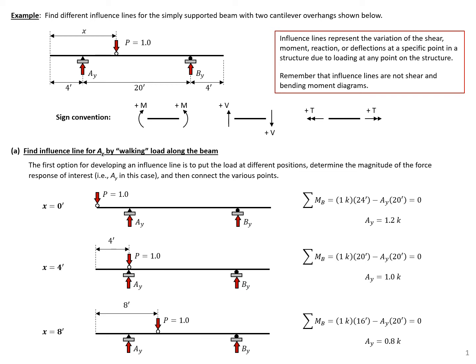In this example problem, we're going to look at influence lines and find different influence lines for a simply supported beam with two cantilever overhangs. We'll use the sign convention for positive moment and positive shear. Influence lines represent the variation of shear, moment, reaction, or deflections at a specific point in a structure due to loading at any point on the structure. Although influence lines may look like shear and moment diagrams, they are not shear and moment diagrams.